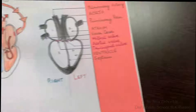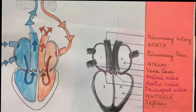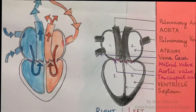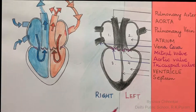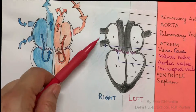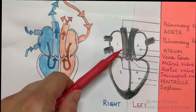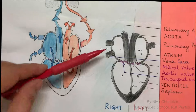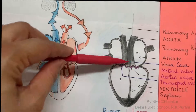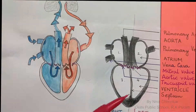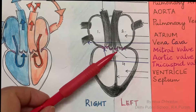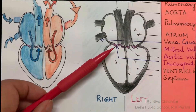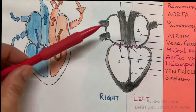If you look at the structure of the heart, it consists of four chambers — one, two, three, and four. It also consists of certain blood vessels, which are tubular structures or channels that bring blood into the heart or move blood from the heart. And it consists of certain valves which are present here.